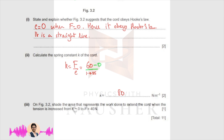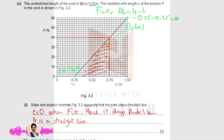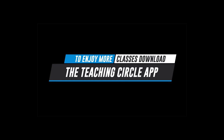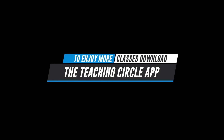For the third part, shade the area on the graph that represents the work done from 0 to 40 Newtons. Go to 40 on the graph and draw a vertical line to get the point 0.75. Remember, always shade the area between the line and the length axis. This shaded area represents the work done.